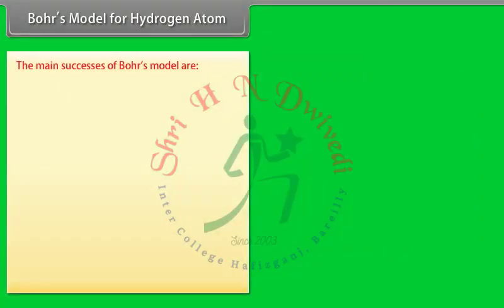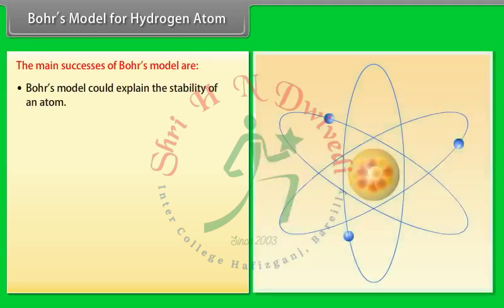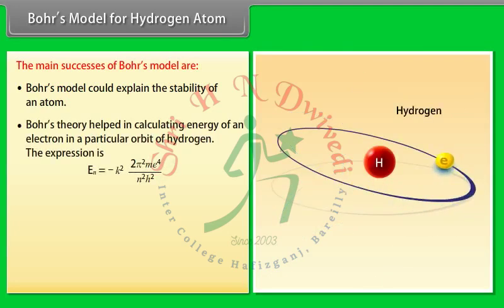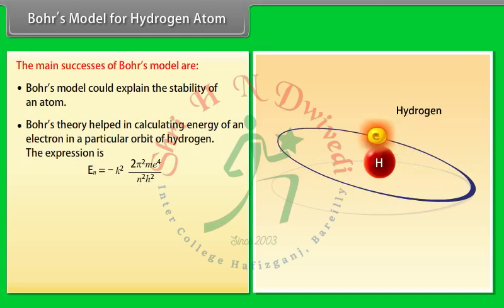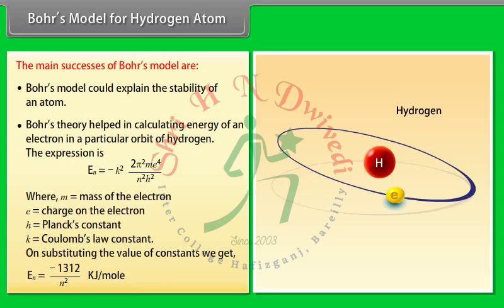The main successes of Bohr's model are: 1. Bohr's model could explain the stability of an atom. 2. Bohr's theory helped in calculating the energy of an electron in a particular orbit of hydrogen. The expression is: En = −(k² × 2π² × m × e⁴)/(n² × h²), where m is mass of the electron, e is charge on the electron, h is Planck's constant, and k is Coulomb's law constant. On substituting the values of constants, En = −1312/n² kilojoules per mole.